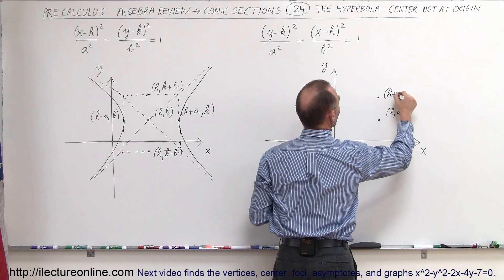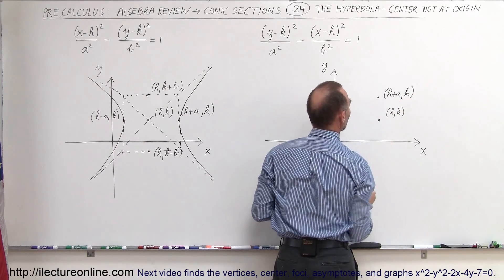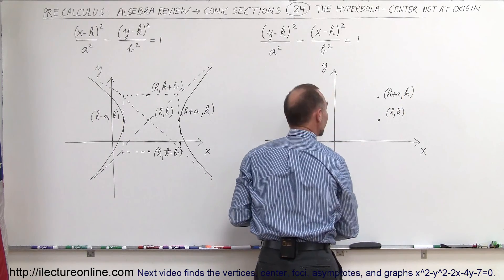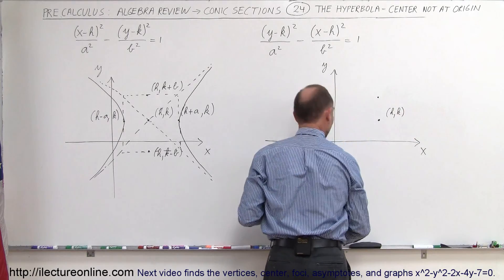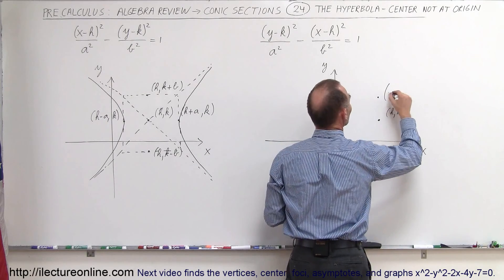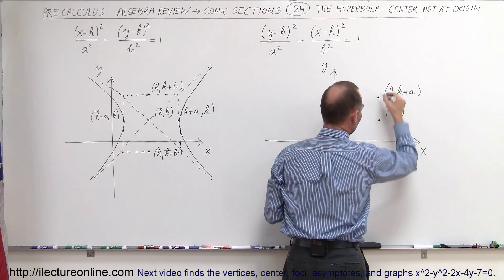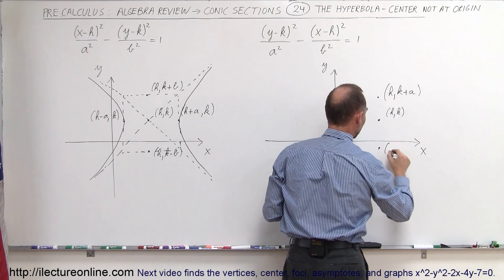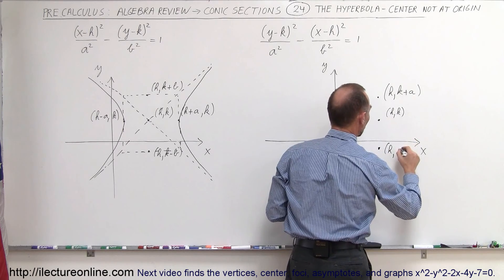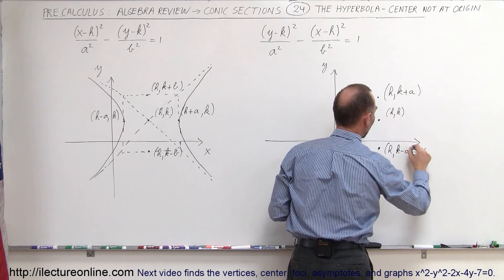So this will be h plus a, and k for the - whoa, whoa, that's not correct. I'll take that back. The x value doesn't change, but the y value is k plus a, and over down here, we have the x value is still h, but the y value will be k minus a.